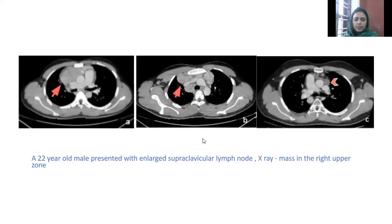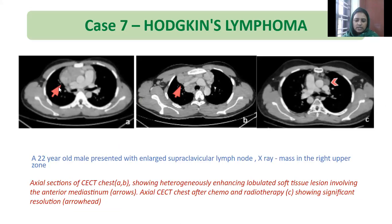A 22-year-old male presented with enlarged supraclavicular lymph nodes. X-ray showing mass in the right upper zone. CT showing heterogeneously enhancing lobulated soft tissue lesion involving the anterior mediastinum. A follow-up image taken after chemo under radiotherapy is showing significant resolution. Biopsy revealed Hodgkin's lymphoma.